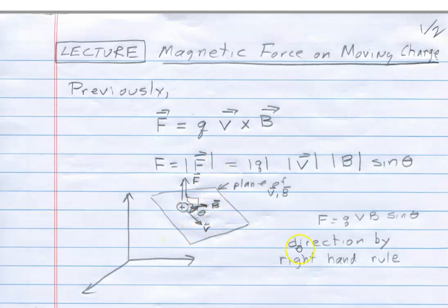And the direction is given by the right-hand rule. V cross B is going to give a direction, it'll always be perpendicular to the plane of V and B, and V cross B will be in this direction if it's positive charge. If it's negative, it's still perpendicular to the plane, it's just going to go in the opposite direction to what I have here.